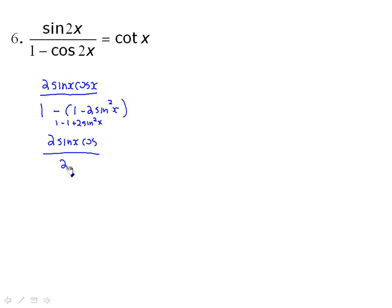So 2 sine x cos x over top. Well this is 1 minus 1 plus 2 sine squared x, so the 1s are gone and we get 2 sine squared x. And now when we divide out by the 2 and by the sine x, we get cos x left on top over sine x, and that is cotangent x equal to cotangent x. So we did it. The left side is equal to the right side. A little bit more complicated but not too bad.